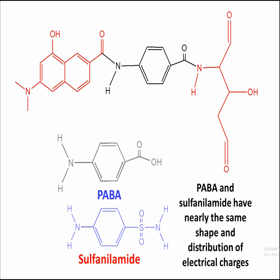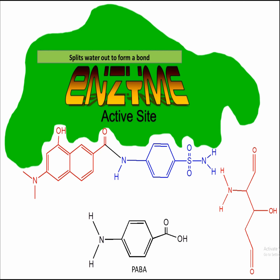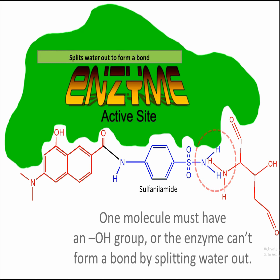Sulfanilamide has a shape and a charge distribution that is very similar to that of PABA. When sulfanilamide is present, it can take the place of PABA in the synthesis of folic acid. An enzyme is required in cells to synthesize folic acid — the enzyme is responsible for splitting water out to form chemical bonds. When sulfanilamide replaces PABA, the last bond cannot occur. There is no OH group present to split water out from. Therefore, folic acid does not form. Sulfanilamide is substituted for PABA.